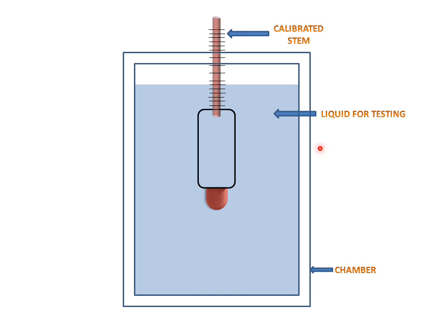We have a calibrated stem on which scales are marked for measuring the density or specific gravity of the liquid.